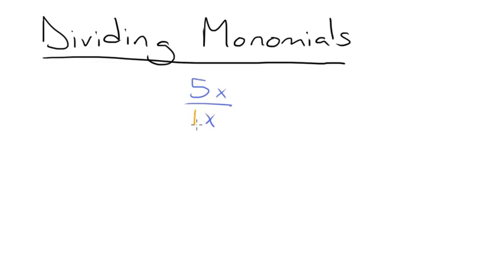So we can divide 5 by 1. 5 divided by 1 is just 5. Then we move on to dividing our x terms. We'll have x divided by x, and anything divided by itself is just 1. Now to get our final answer, we simply multiply these two things together. So we'll have 5 times 1, which is equal to 5. That means that 5x divided by x is equal to 5.